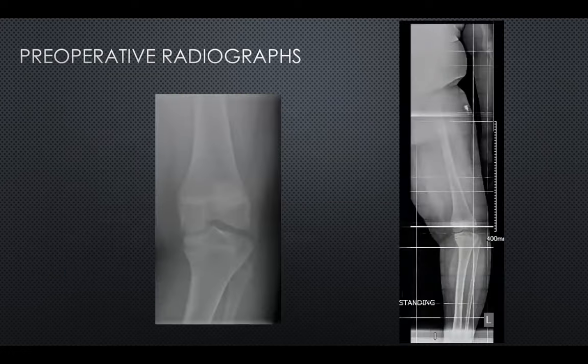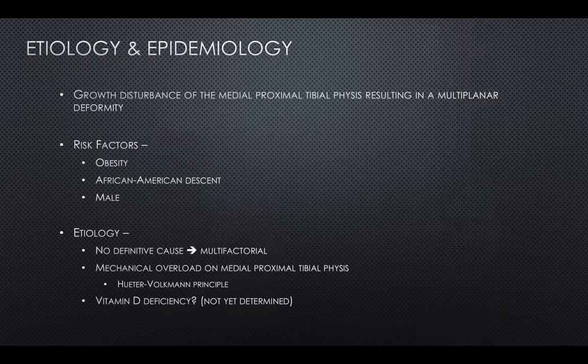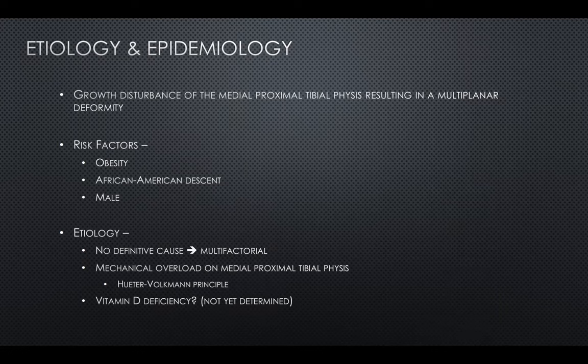Alignment films showed a varus deformity of the knee with contributions from both the femur and tibia. Adolescent Blount disease is a growth disturbance of the medial proximal tibial physis resulting in a multi-planar, three-dimensional deformity. Despite the name suggesting only a proximal tibial varus, there is also a procurvatum deformity and internal torsion of the tibia. Distal femoral varus and distal tibial valgus deformities can also develop. Risk factors include obesity, African-American descent, and male sex — our patient had all three.